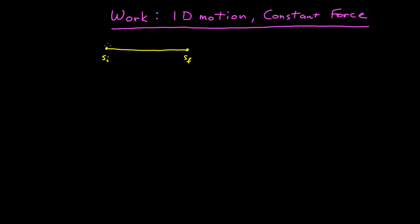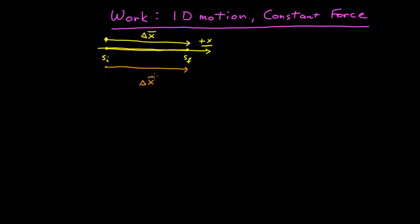Given that it's in a straight line, I can then establish my coordinate system along that line — let's call it delta x — and then I can calculate the displacement vector delta x as the vector that points from the initial position to the final position along the straight line path that the object moves.